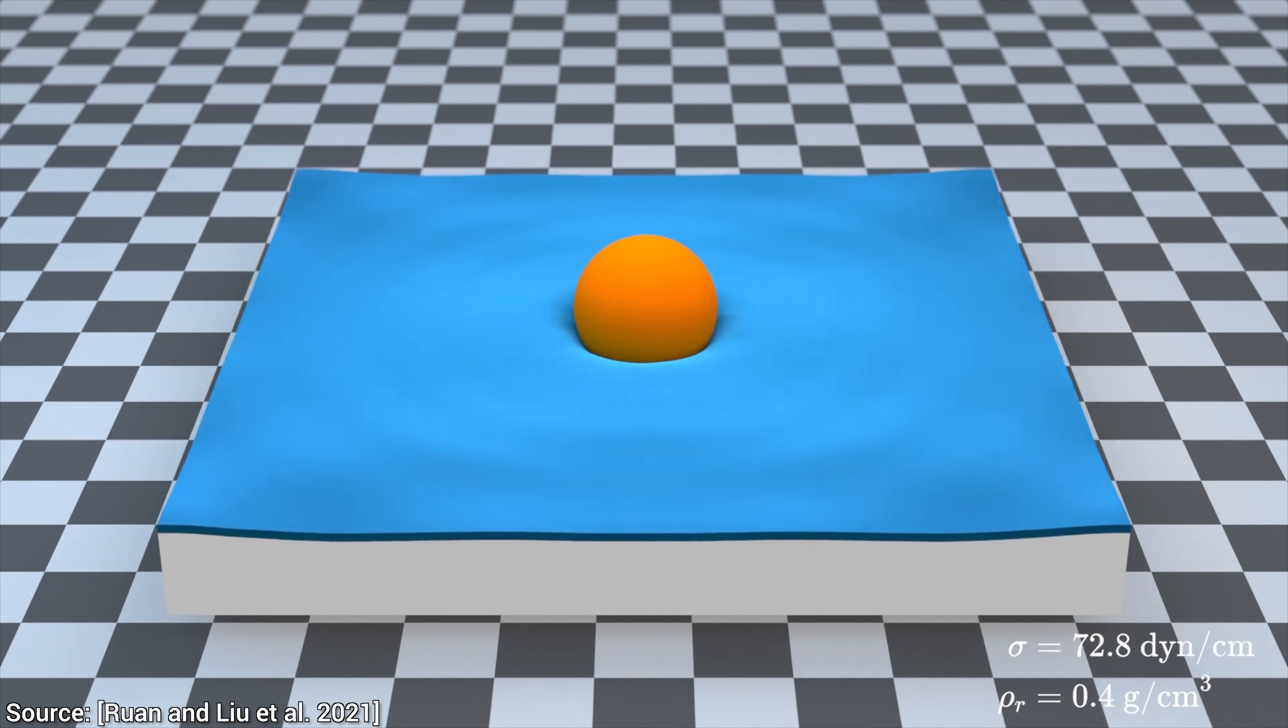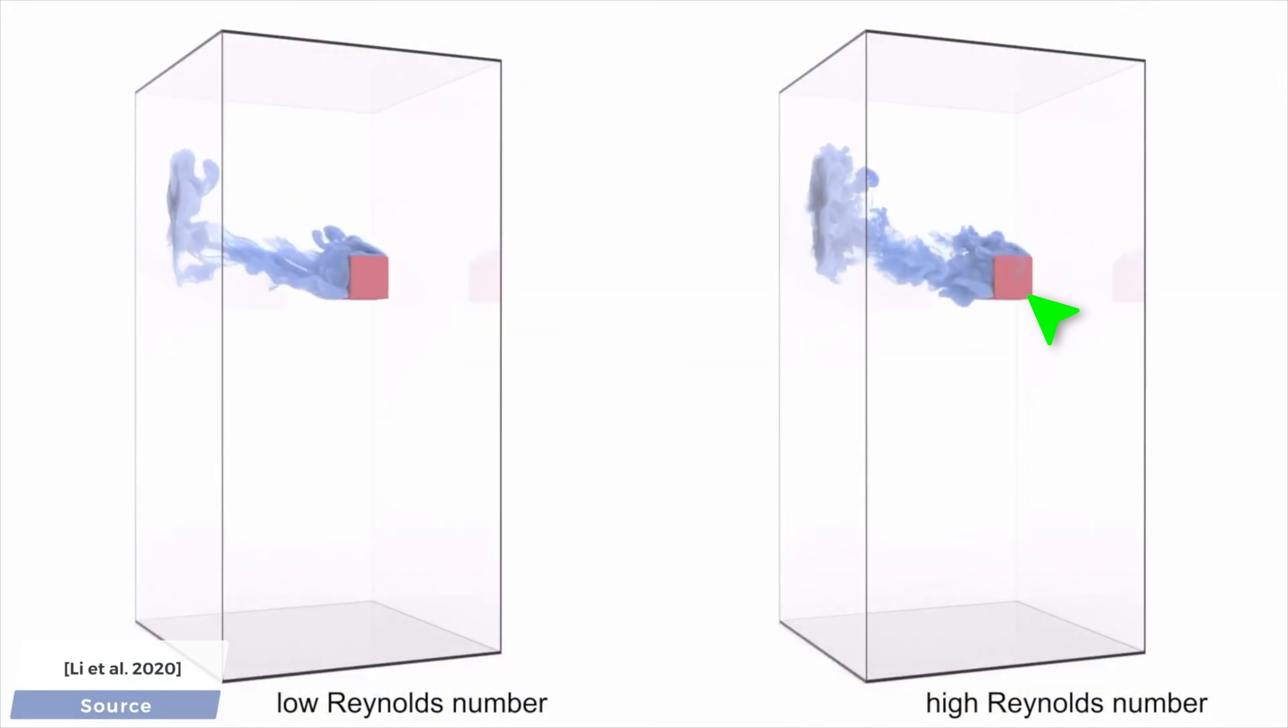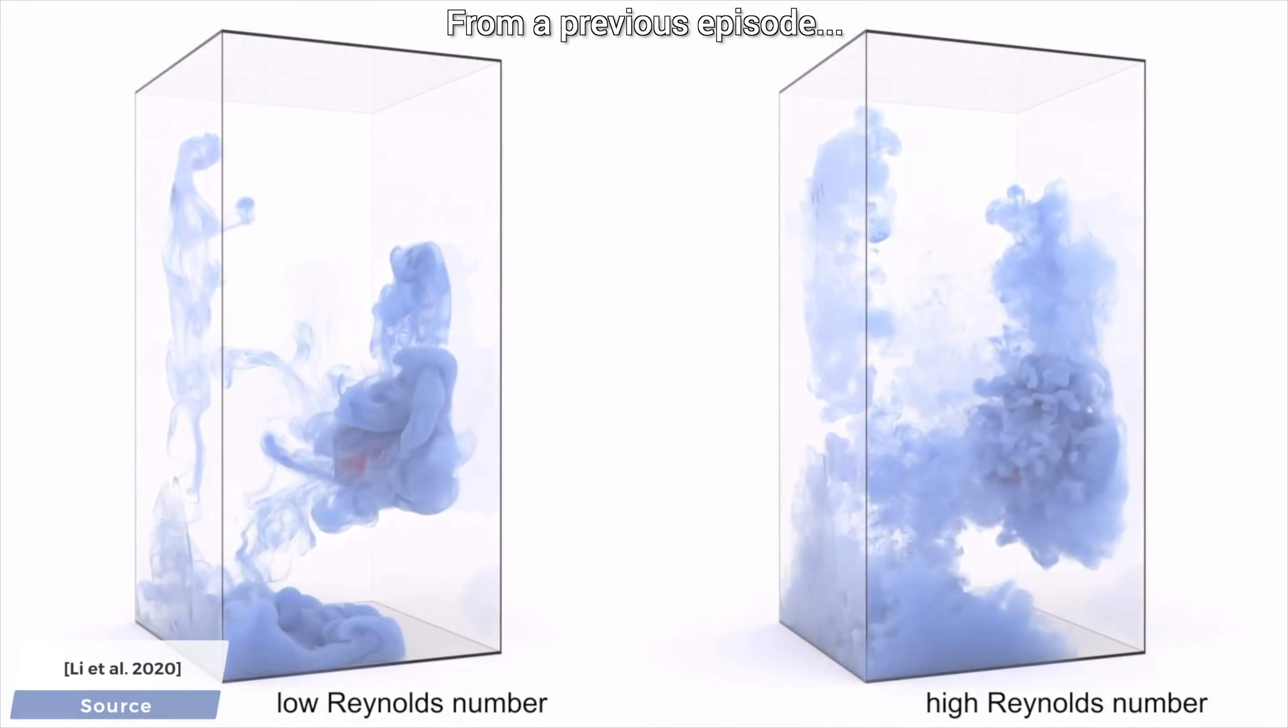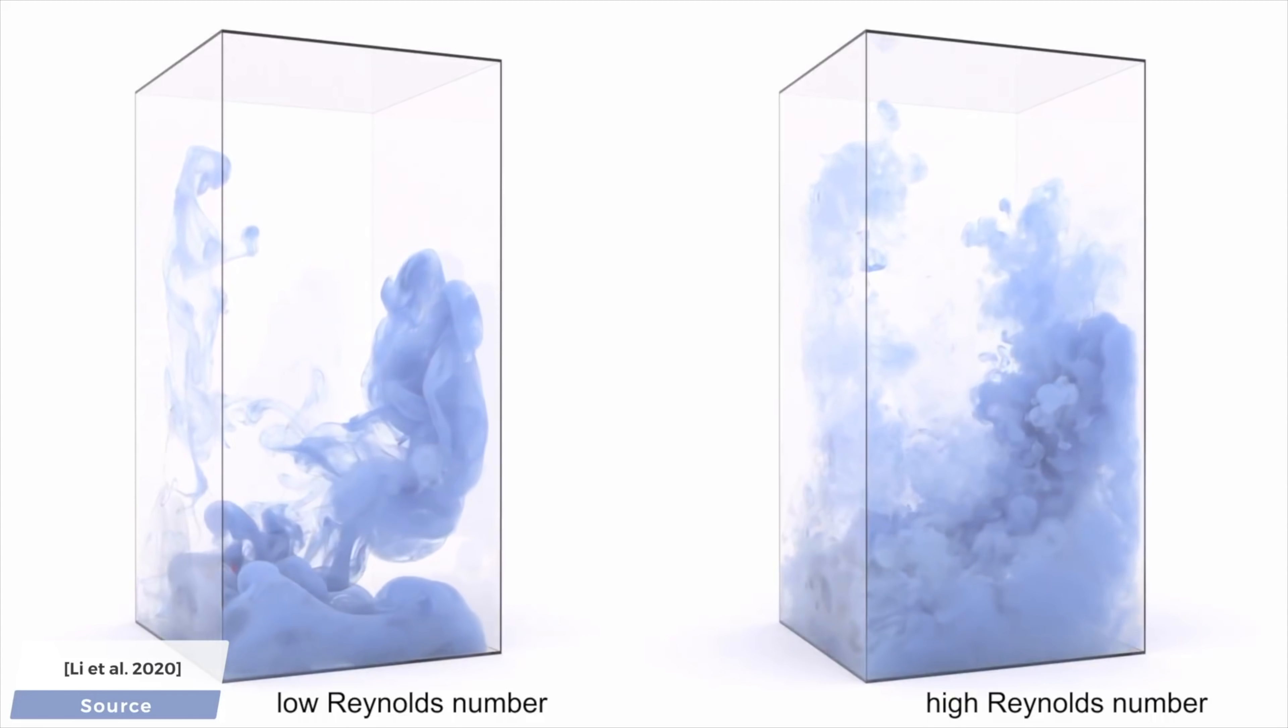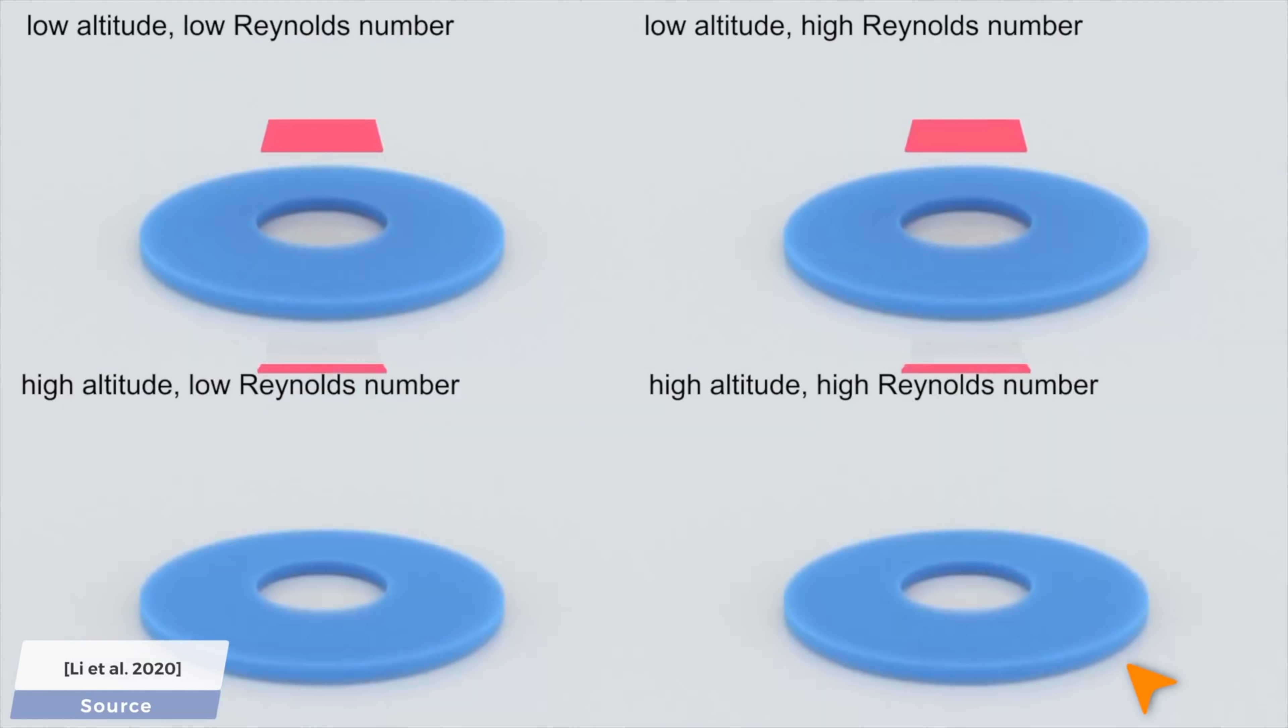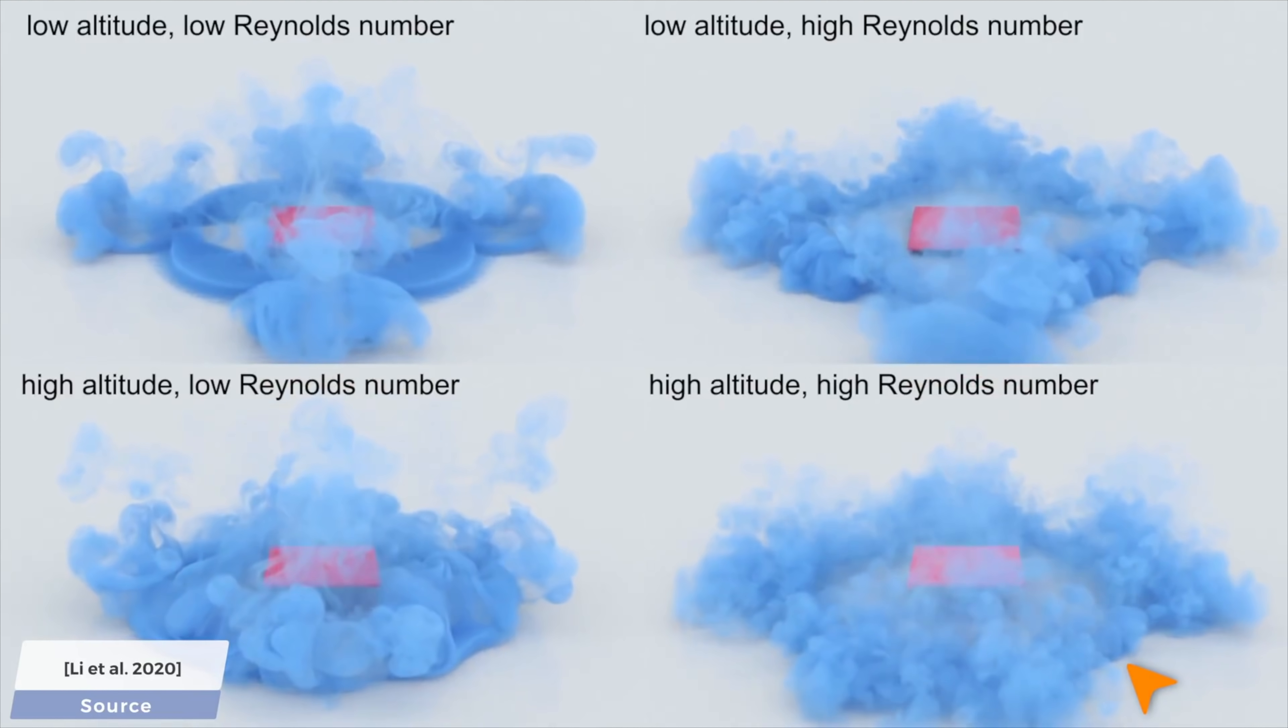So, what does that mean exactly? Well, first, let's have a look at one-way coupling. As the box moves here, it has an effect on the smoke plume around it. This example also showcases one-way coupling where the falling plate stirs up the smoke around it.